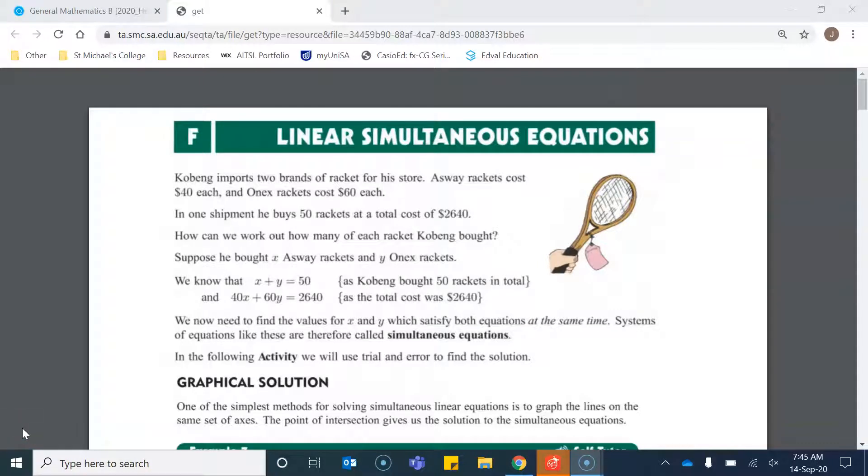In this chapter we're going to look at solving problems which have two unknown variables. We're given a problem where Cobain has two types of rackets for his store. The Asway rackets are worth $40 each and the Onyx rackets are worth $60 each. We are told that he's bought 50 rackets and the total cost is $2,640.